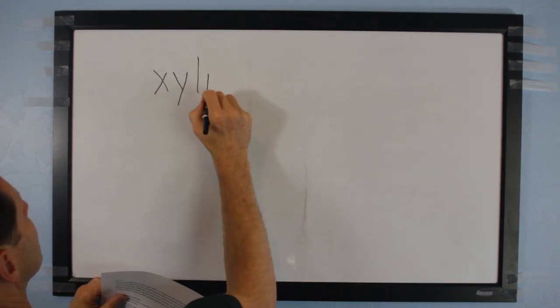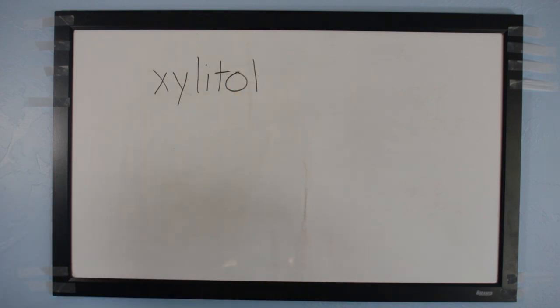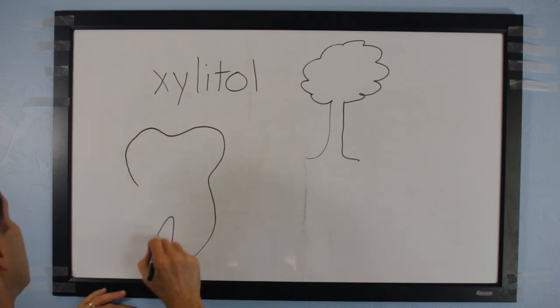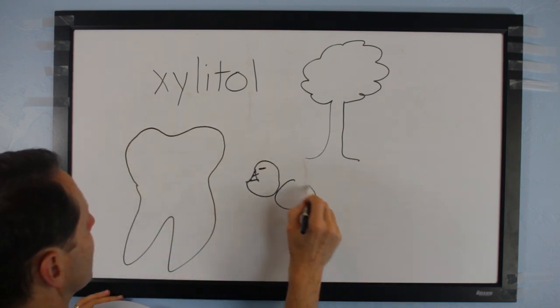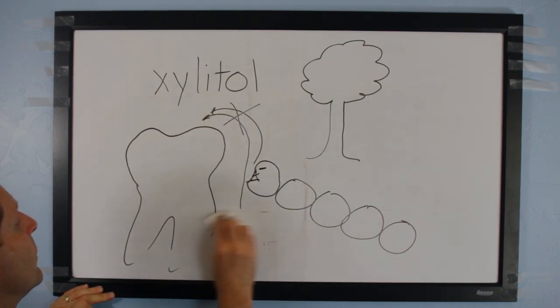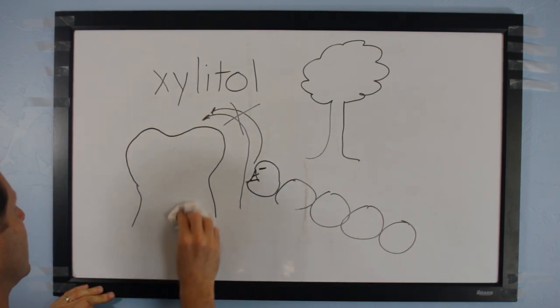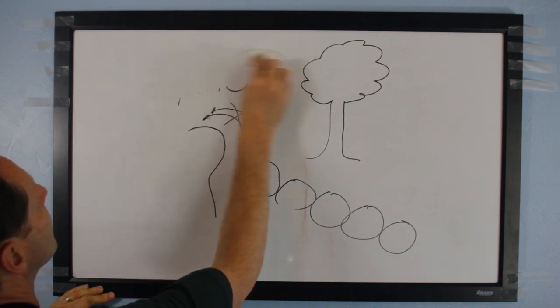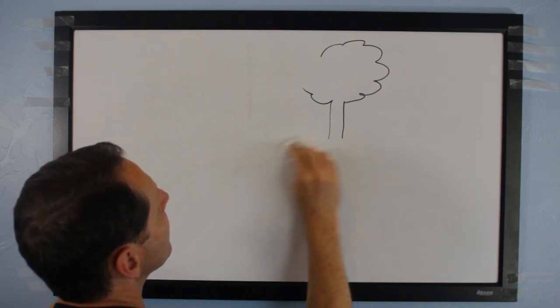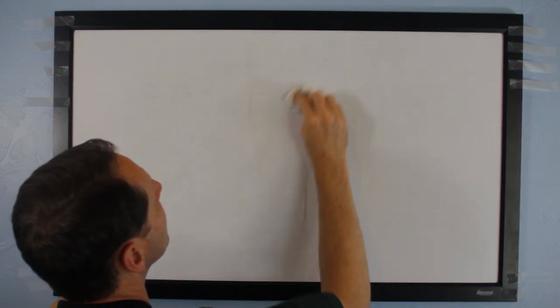There is one exception to the list of sugars: xylitol. It is a natural sugar from birch trees that actually prevents tooth decay. It does so by preventing the Streptococcus mutans from sticking to your teeth. It comes in products like chewing gum and mints found in health food stores. The chewing gum is more effective because it stimulates saliva flow, which I will talk about later. In order for it to be the most effective, you have to chew the xylitol-sweetened gum five times a day.